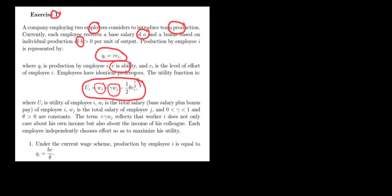Then we have a negative dependence on effort. The idea is that effort is costly, so utility decreases when we work hard. Under this wage scheme, what would be the optimal production?